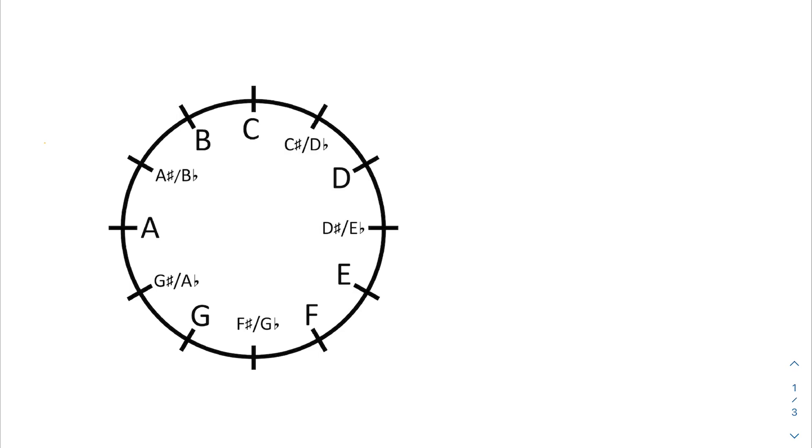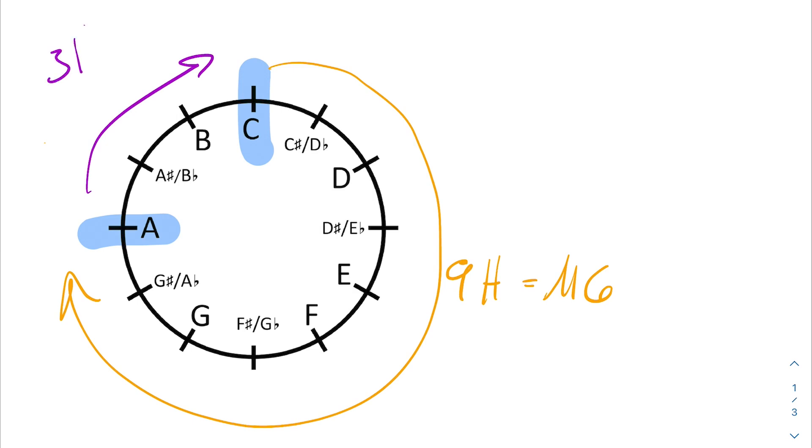But let's say we wanted to just deal with inversions of intervals. Say we have a C up to an A, which if we counted that up, we would get our 9 half steps, which would of course be our major sixth. Then the inversion of that would have to be the 3 half steps we have left. So that's a minor third. The inversion of your major sixth being your minor third.